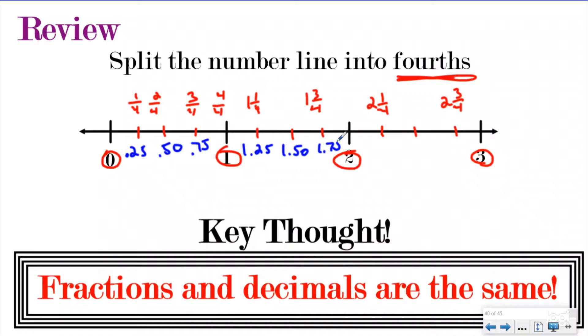We have one whole, then one and seventy-five hundredths, two wholes, two and twenty-five hundredths. We can think about fractions and decimals being the exact same thing, just a different way to write it.